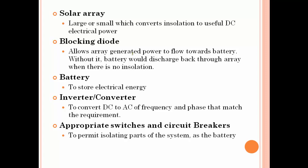The solar array generates electricity. The blocking diode prevents current from flowing in the reverse direction back to the array. The battery is used to store electrical energy. The inverter or converter is needed because solar arrays produce direct current (DC), and a DC-to-AC converter is used to supply AC power. Finally, appropriate switches and circuit breakers are included.